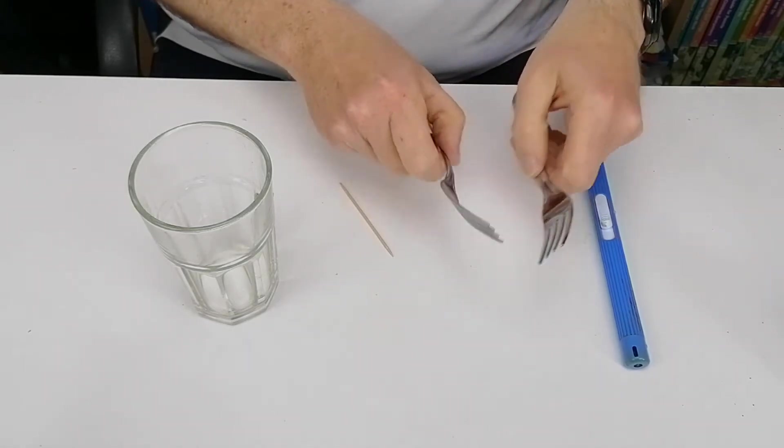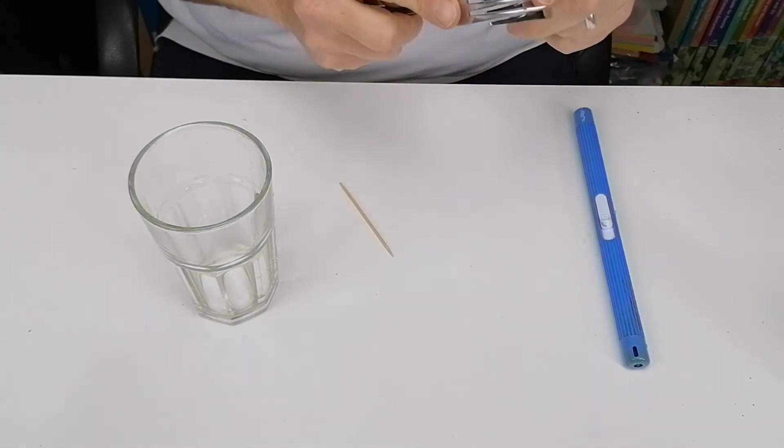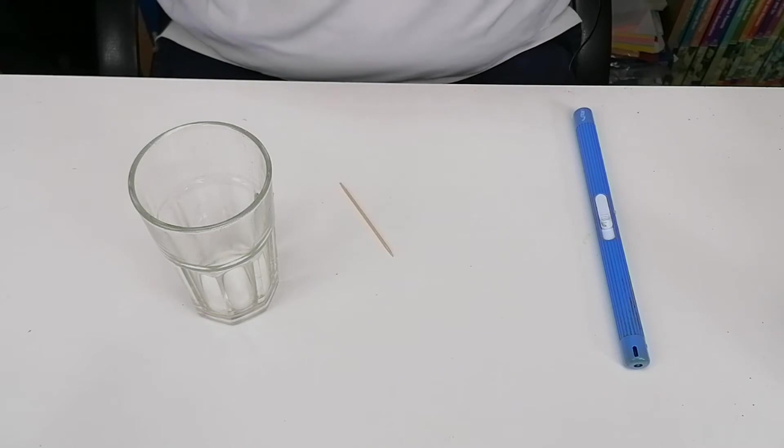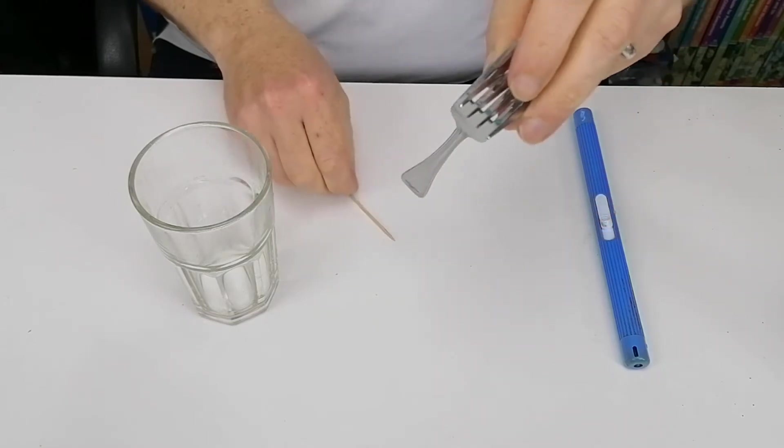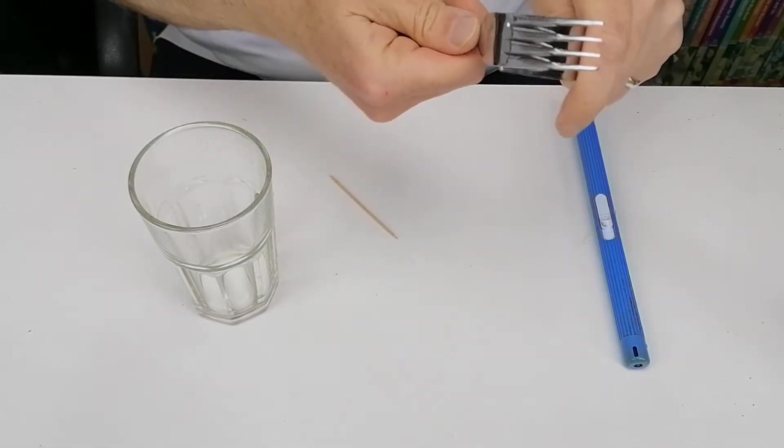So what you're going to do is you're going to take the two forks and you need to push them together. You need to put a lot of force in that so that they stay together in the same position as close as you can. Then you'll see that there, push together like that, takes a little bit of work.